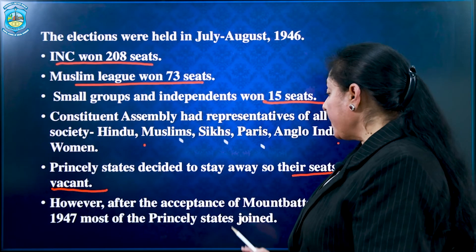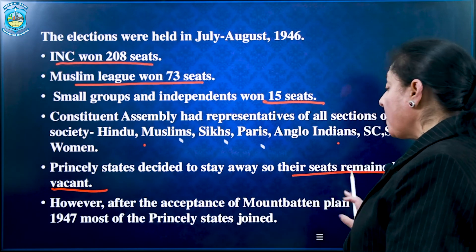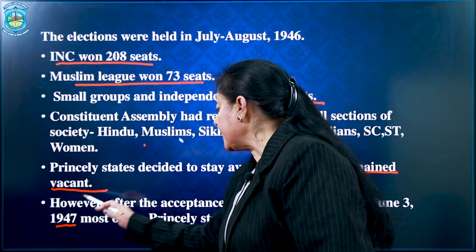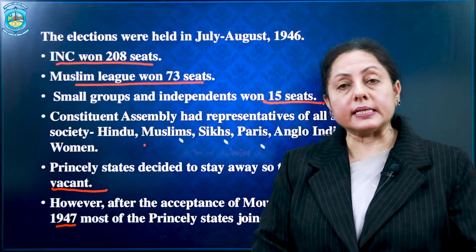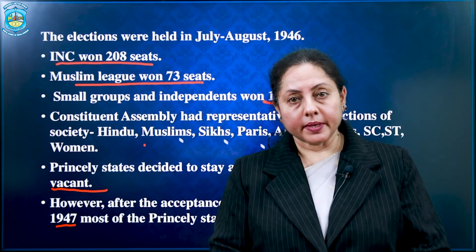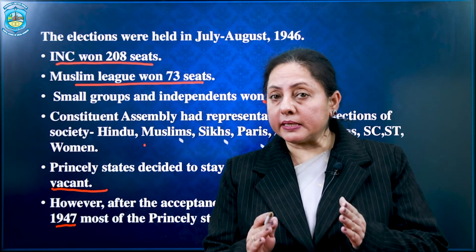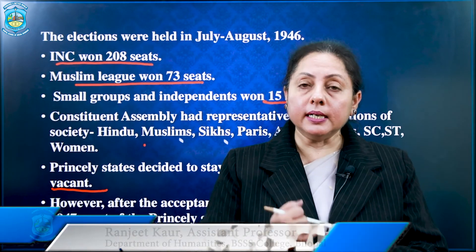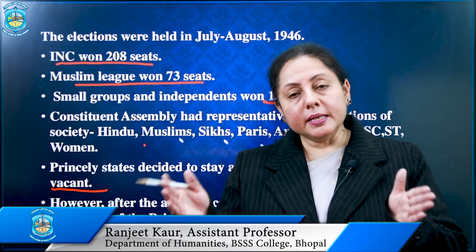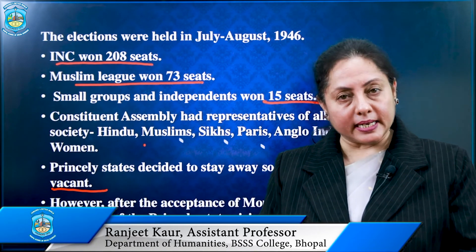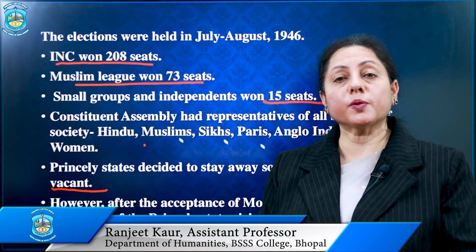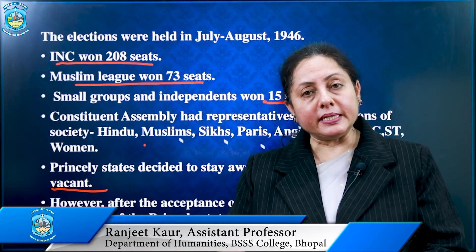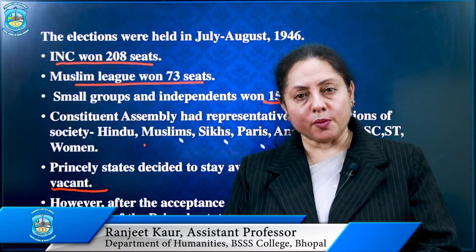However, after the acceptance of the Mountbatten Plan of 3rd June 1947, most of the princely states joined. What was the Mountbatten Plan? Why did the princely states refuse earlier? And how was the partition of India done and two sovereign states — India and Pakistan — formed? We will be dealing with this in the next module.